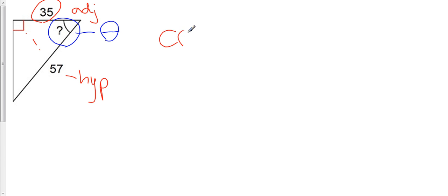So that would be cosine. So cos theta, we know that cos theta is equal to the adjacent over the hypotenuse.